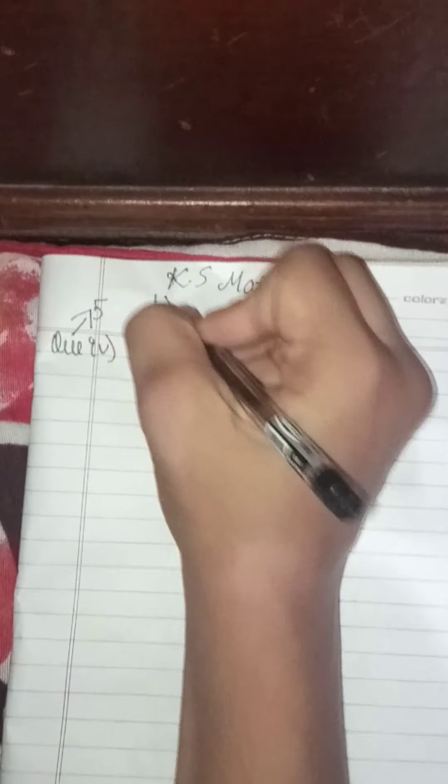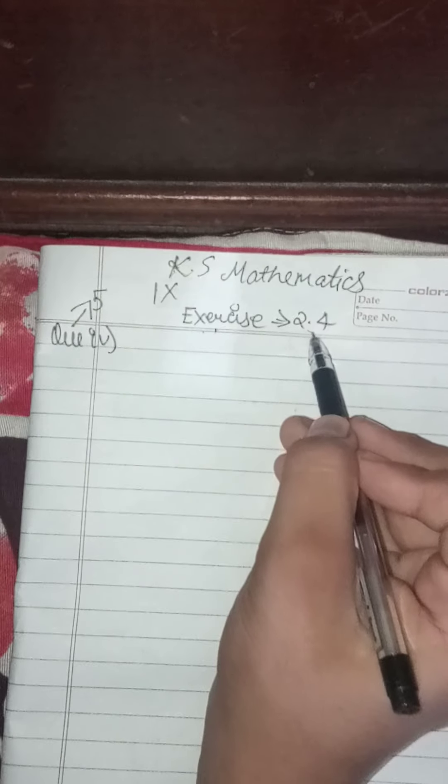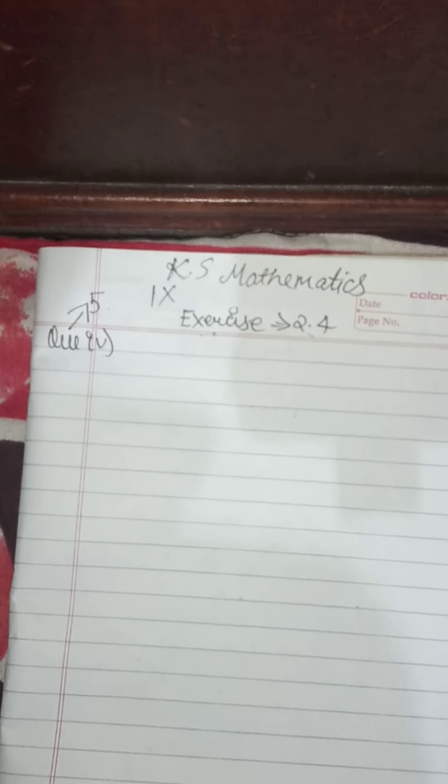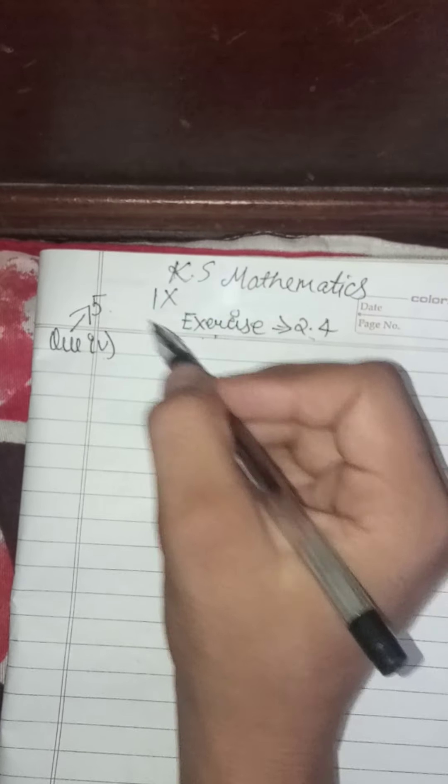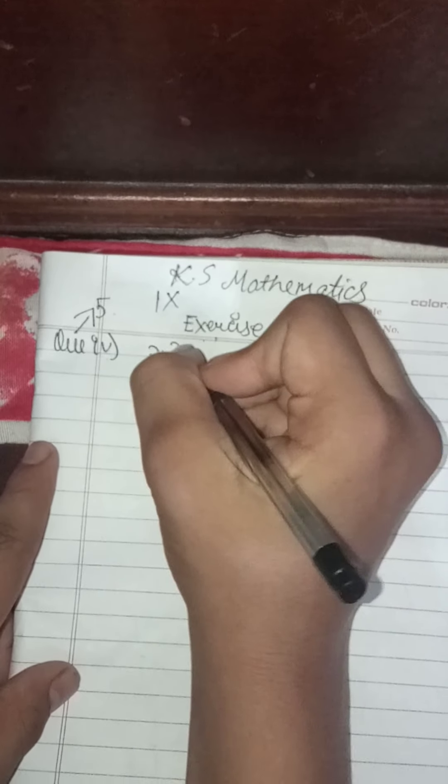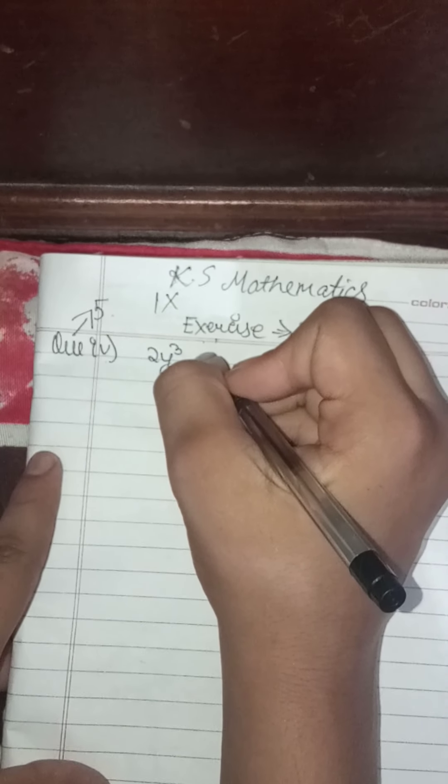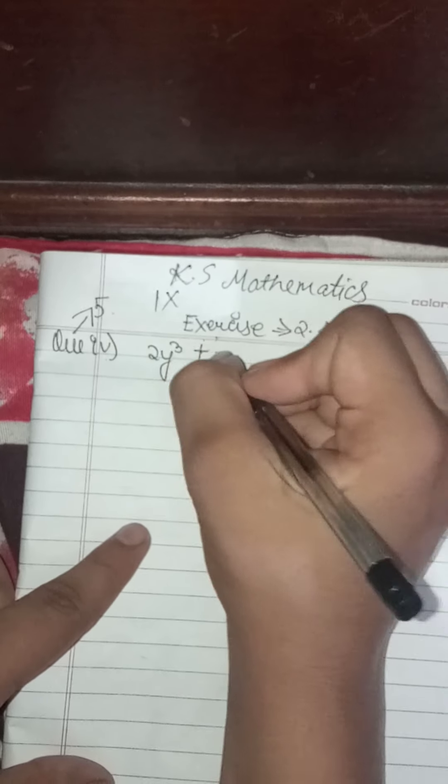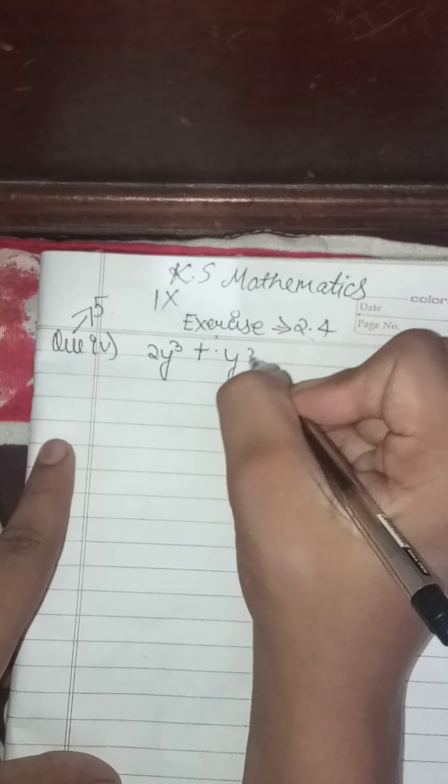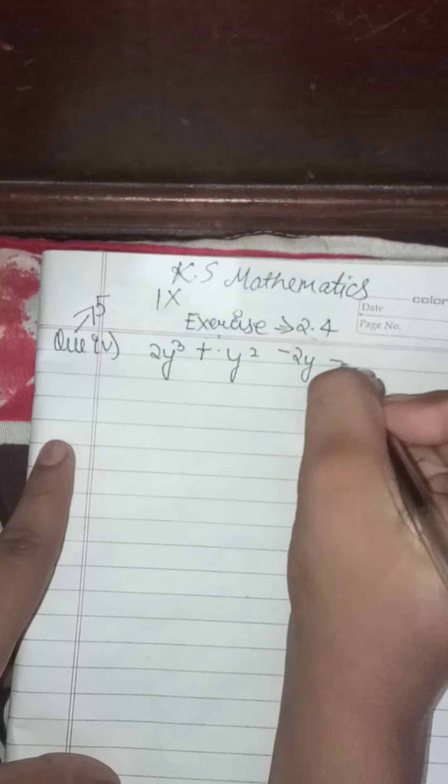Welcome to KS Mathematics class 9th, exercise 2.4, question number 5, part 4, and this is the last part of this question. In this question we have to do the same which we have done in all the parts. The question is 2y cube plus y square minus 2y minus 1.